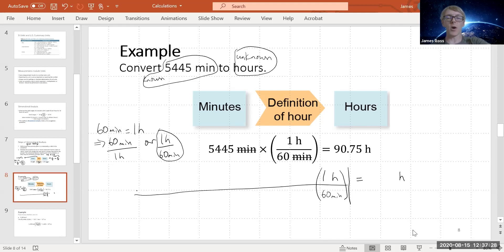And then I know to put minutes up here to cancel it with this minute here, because there's no minute in my answer. My input now becomes relevant. So I put my 5445 in, and then I put my answer in. So that was the process.